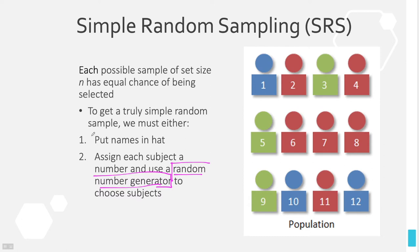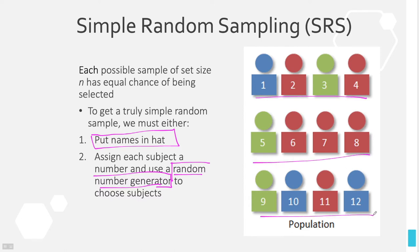To do simple random sampling, you could use a random number generator by putting names in a hat, shaking it, and drawing out different names. But most of the time you will assign every single member of the entire population a number — you might alphabetize a list, for instance. It doesn't matter if the list is ordered. You assign them numbers from 1 to whatever, and then you're going to use the random number generator. Let me show you that on the calculator.